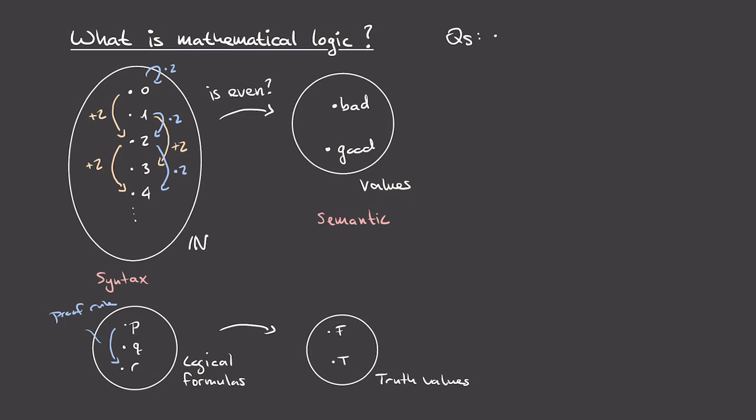The first question is: are the rules sound? Soundness means that whenever we start with a true formula and apply a proof rule, we again obtain a true formula. Or in our numbers example, whenever we start with a good number and apply the arithmetic operation, we end up with another good number. Soundness basically means that whenever you start with something good, you can't move to something bad by using the rules.